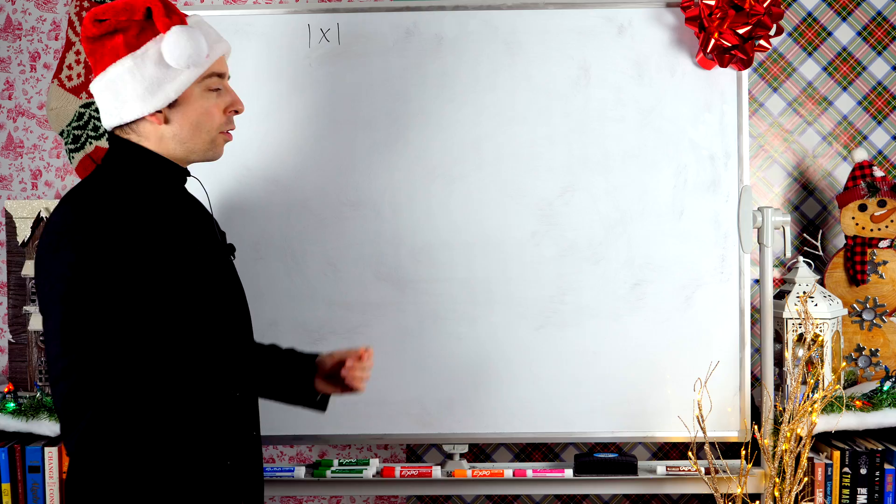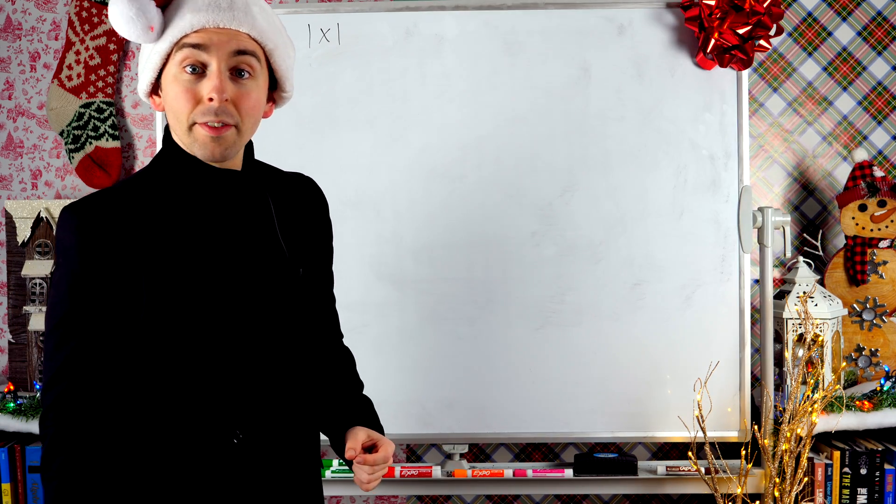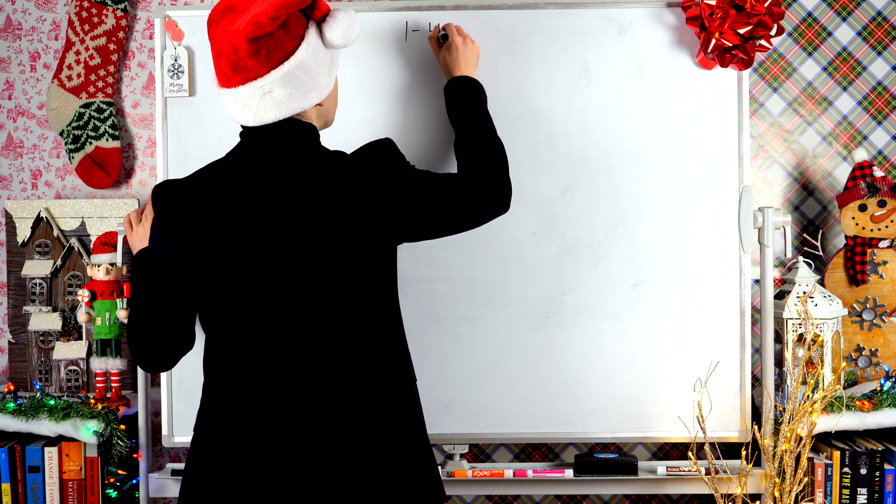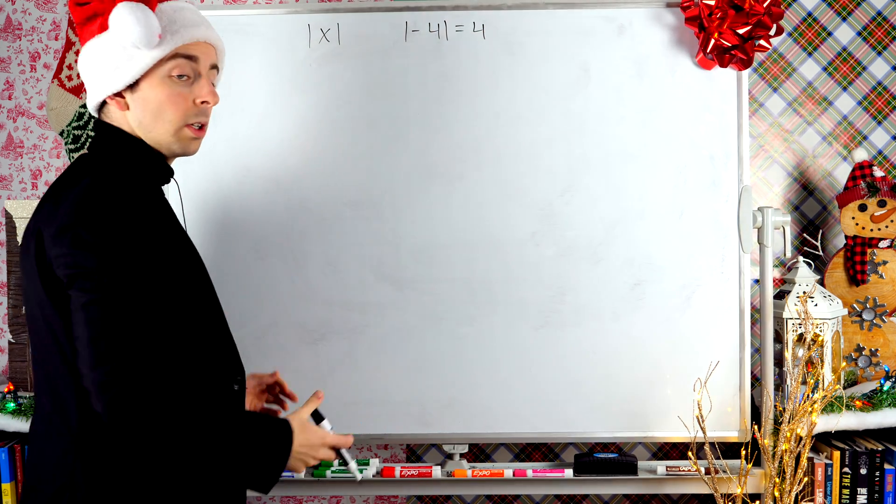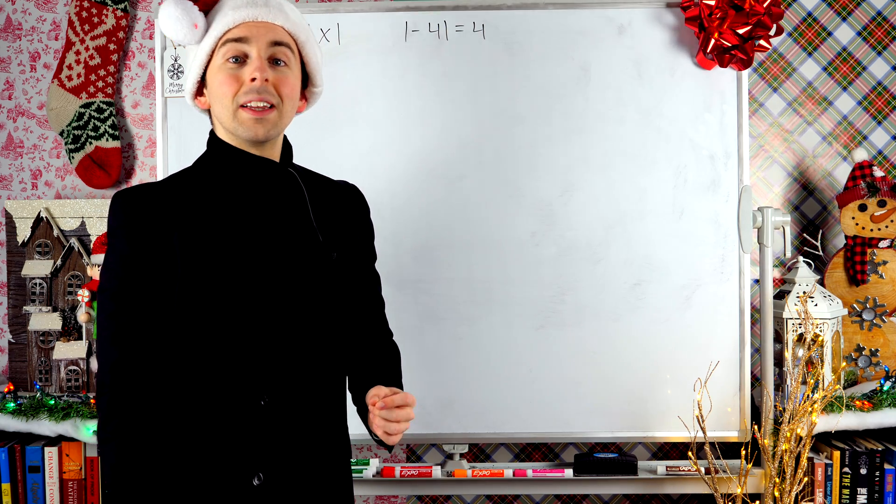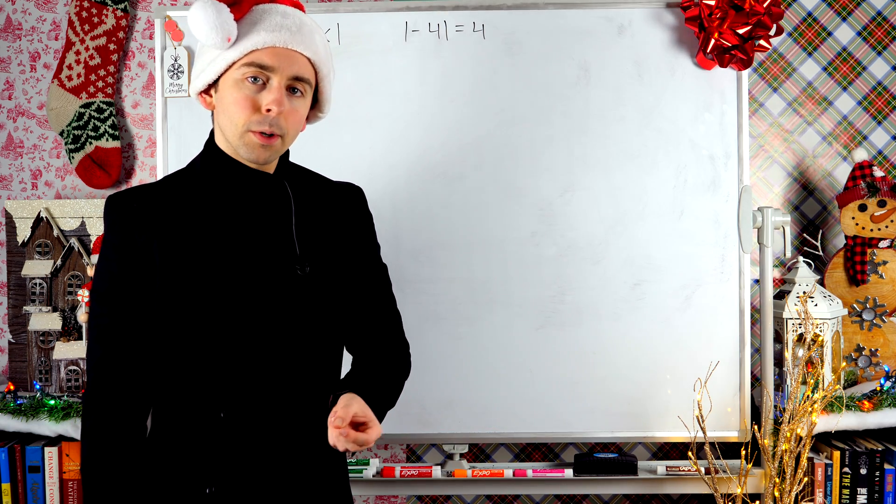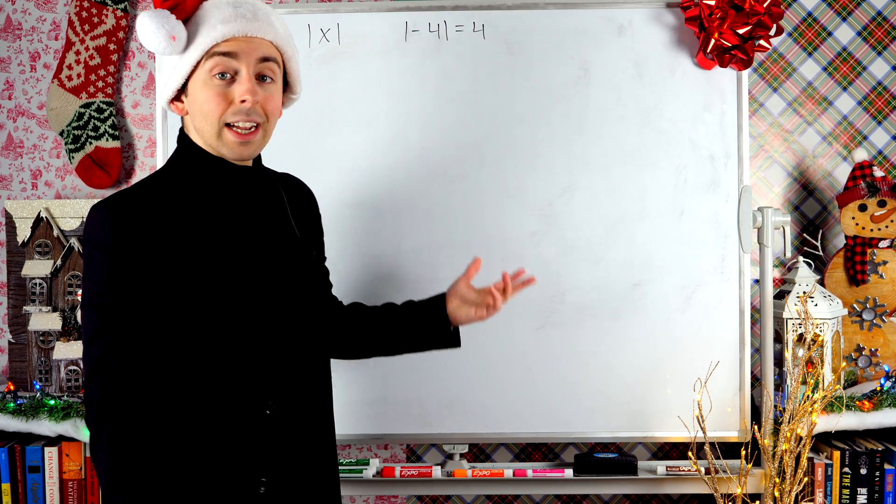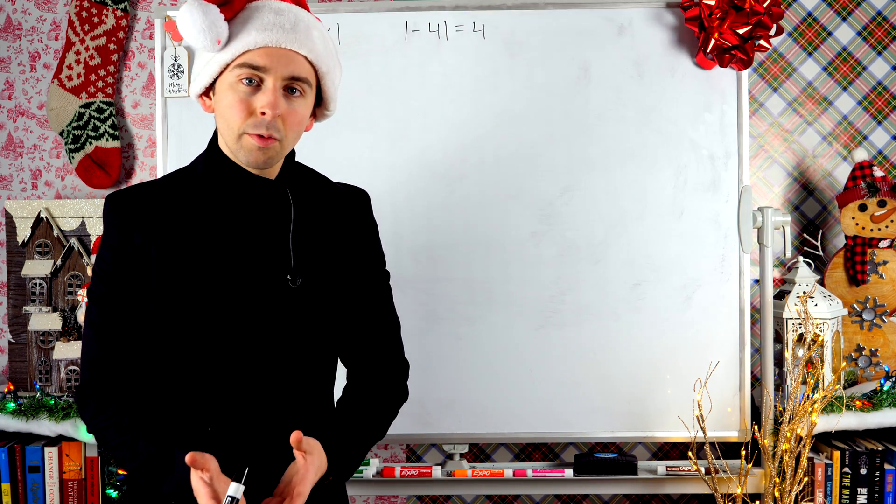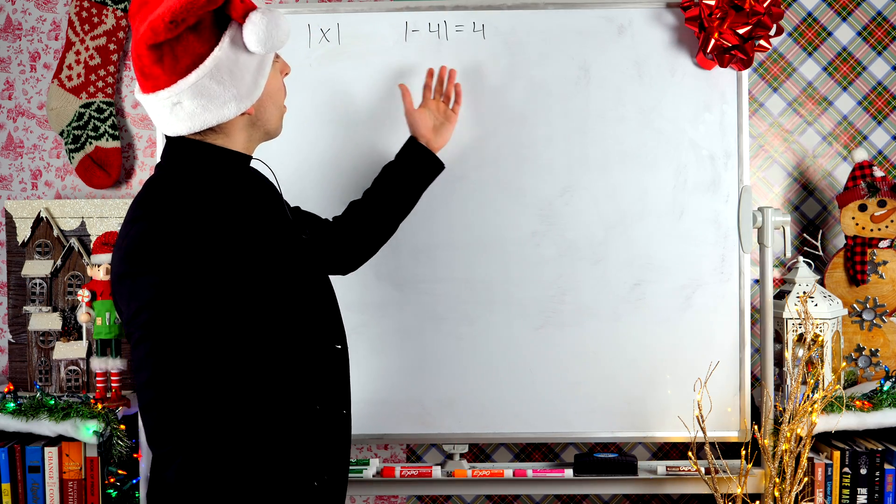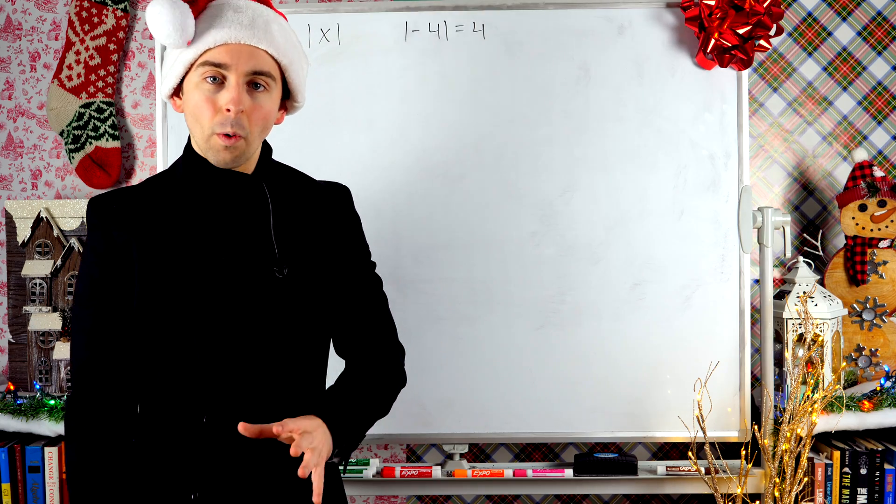The absolute value function just gets rid of negatives. So for example, the absolute value of negative four is equal to four. One way we often think of absolute value is that it tells us a number's distance from zero. So even though negative four is negative, it's four units from zero, and so the absolute value of negative four is four.